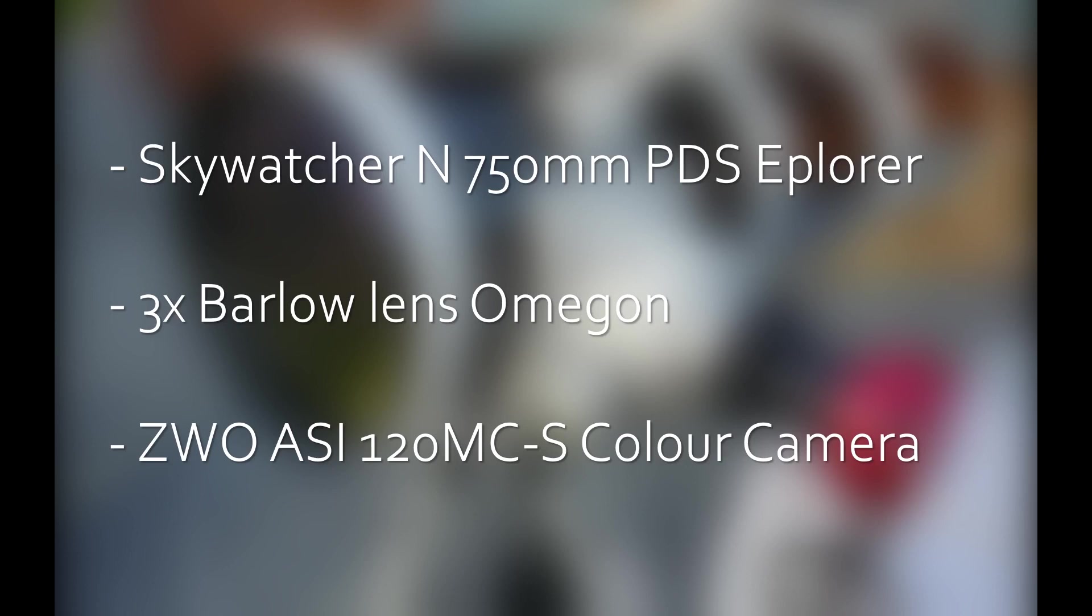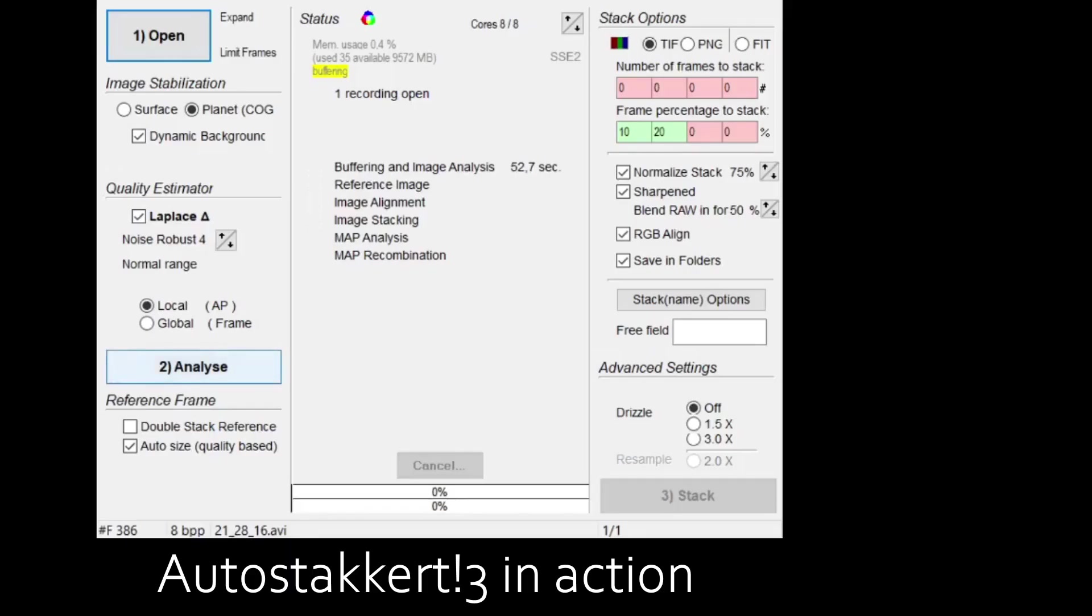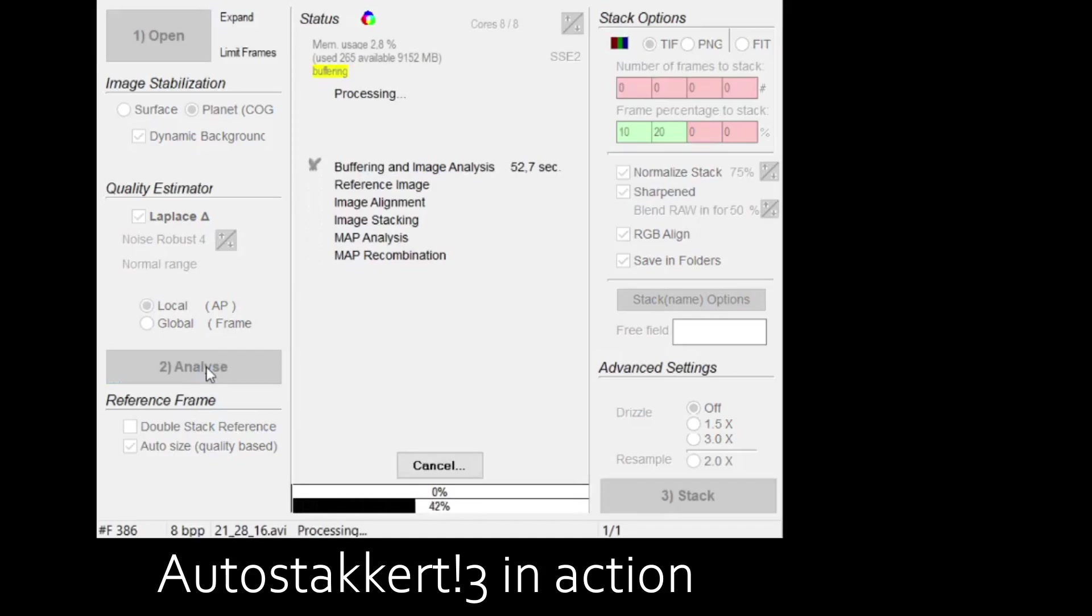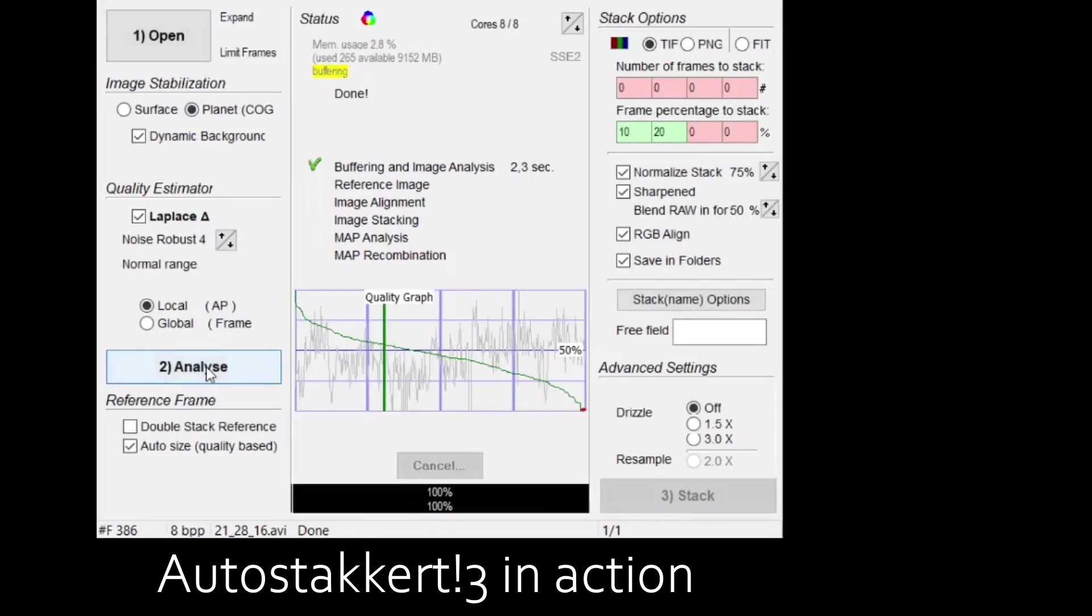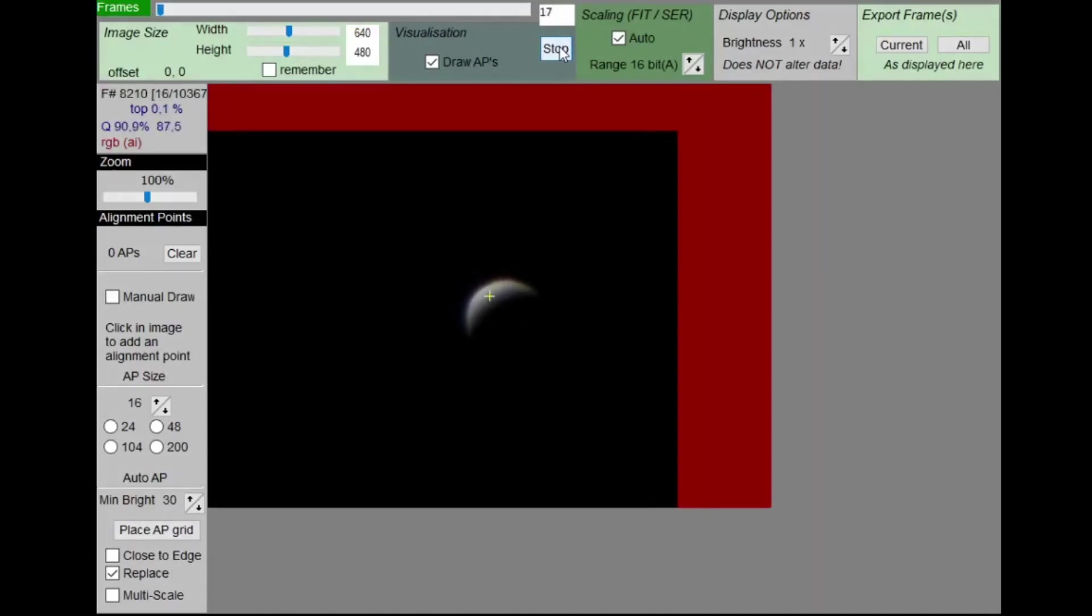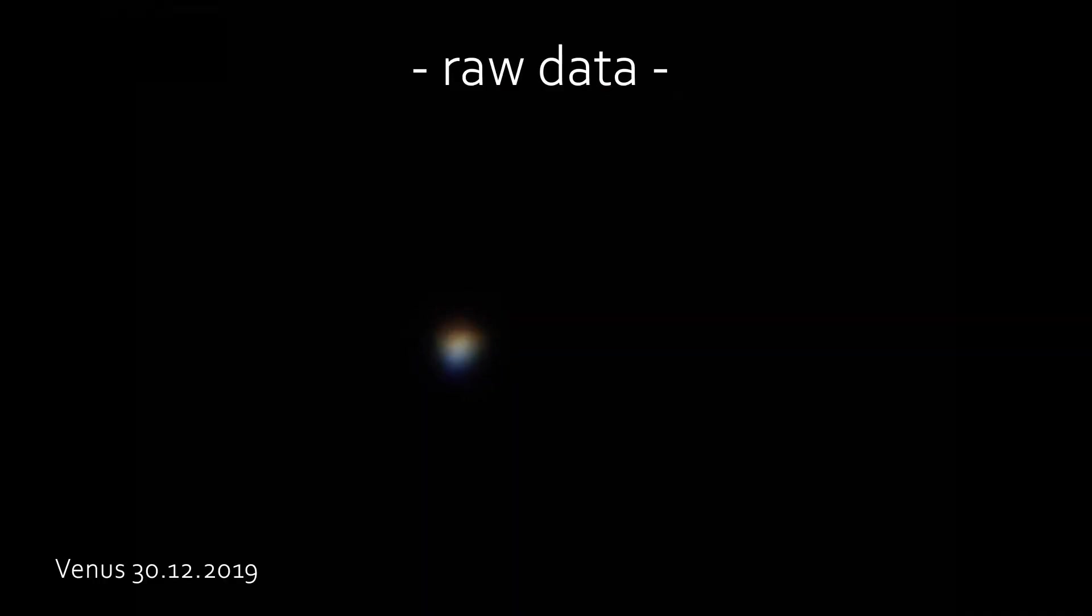I needed a 3x Barlow lens from Omegon and used a ZWO ASI 120 MCS color planetary webcam. Capturing planets means taking short video files and letting a software grab the best frames and stack them together to get an even better image. We won't cover this here. There will be a separate video devoted only to planetary imaging. For now, I used the same software, even the same settings, for all three attempts.